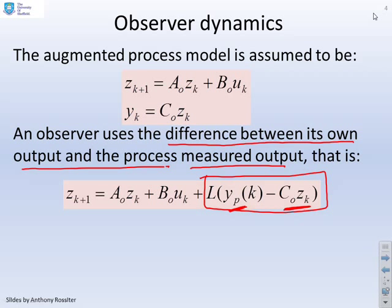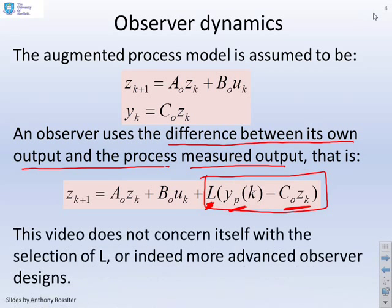Now if there was no error, there will be no correction. And this error is multiplied by L, and L obviously has to be chosen. That's the observer gain, and that will basically give you observer dynamics. What we're not going to do in this video is concern ourselves with how L might be selected.